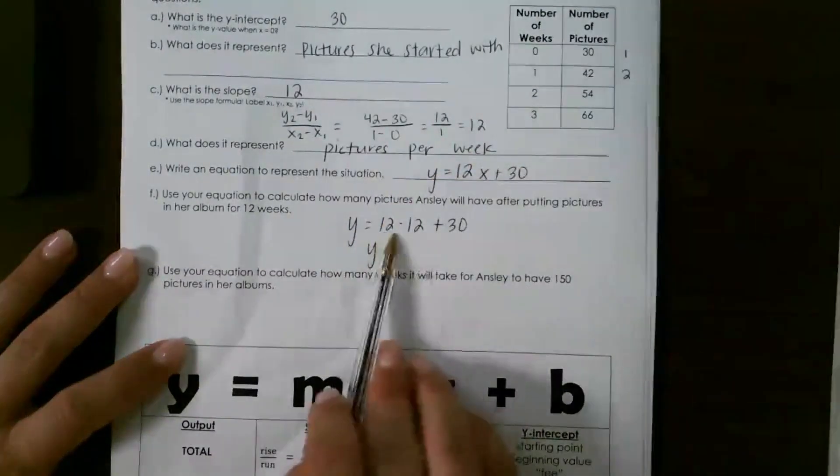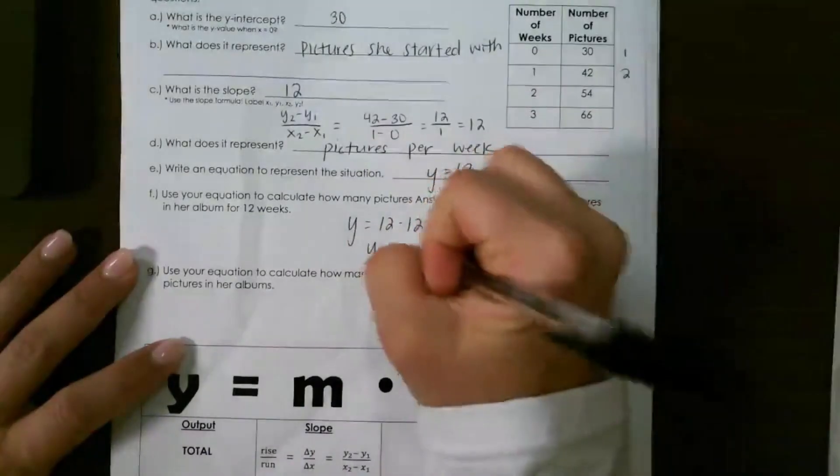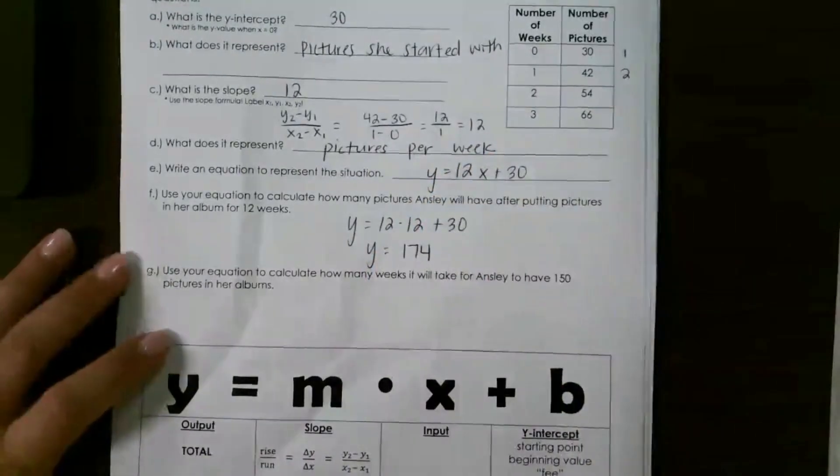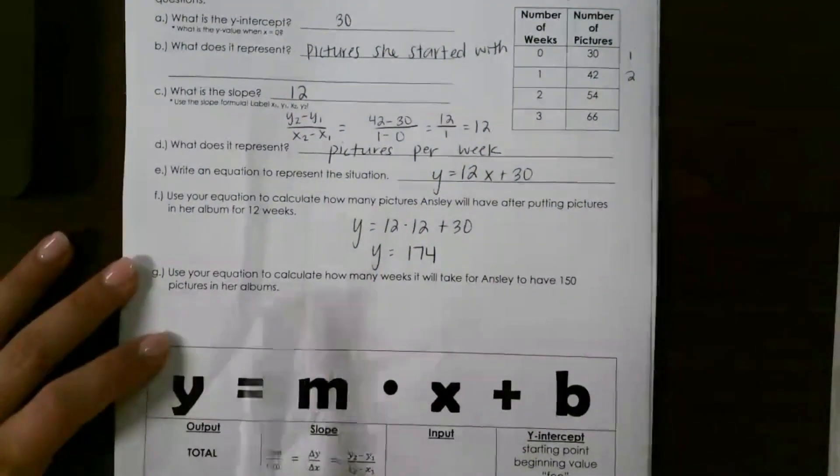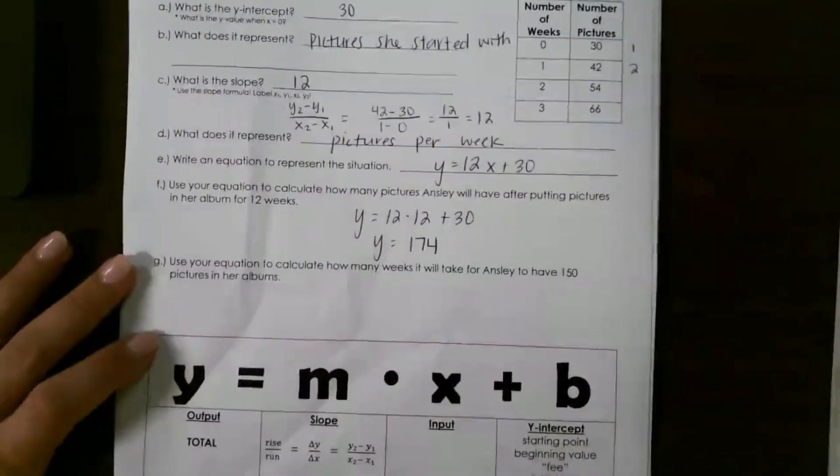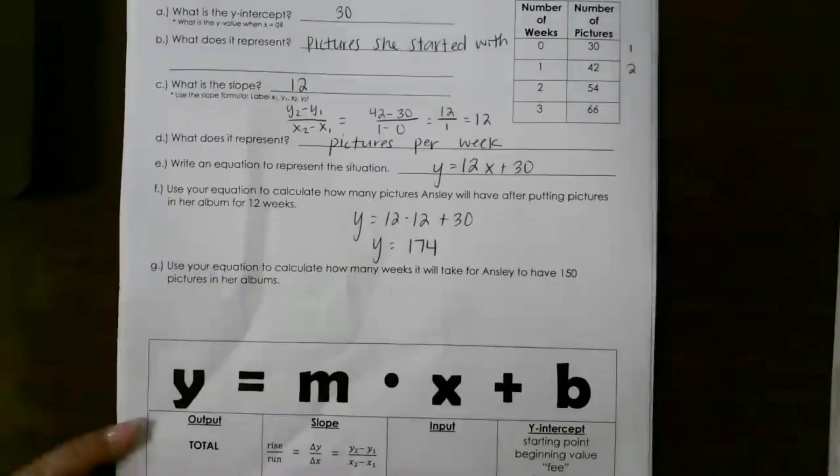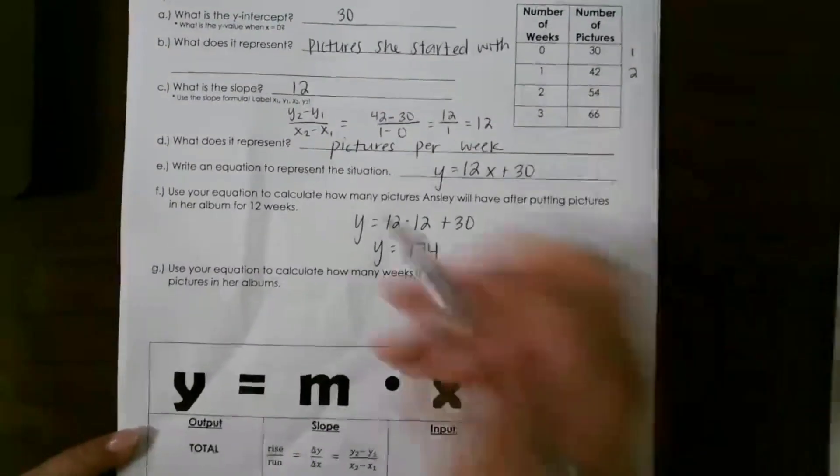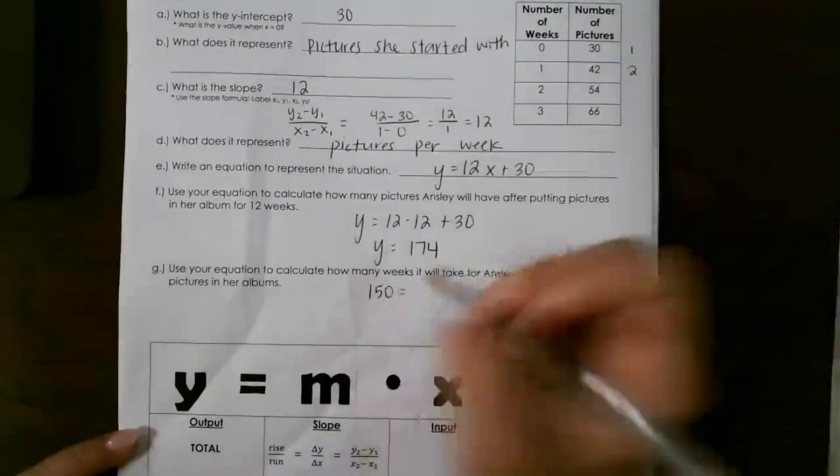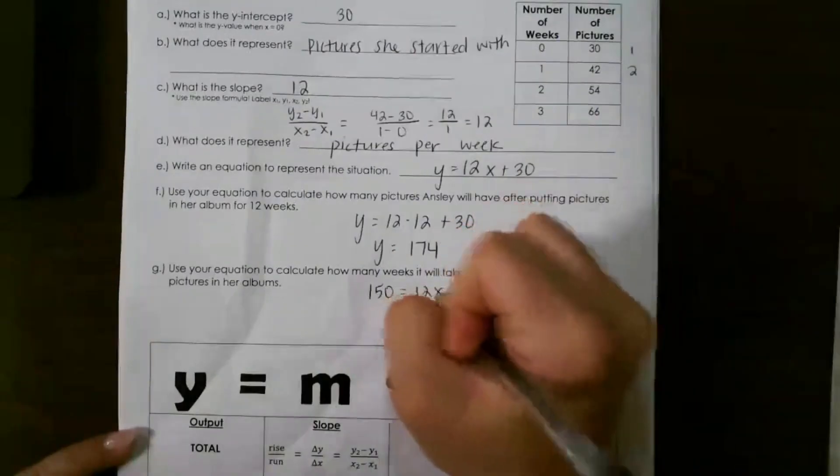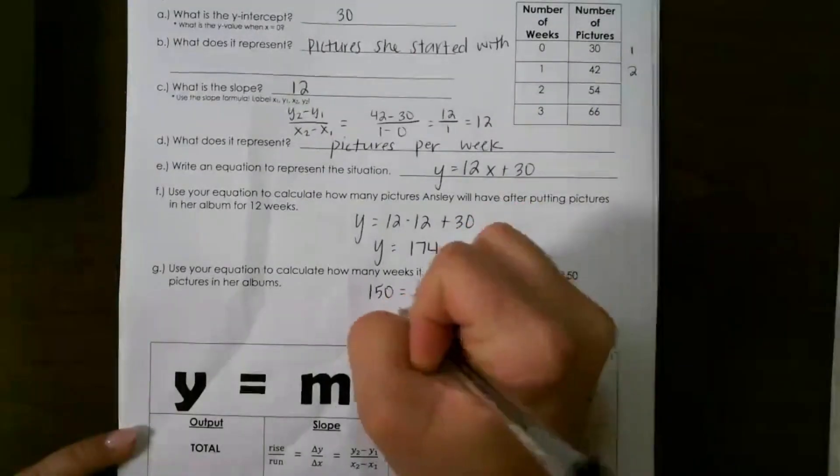So that's 144 plus 30 will give me 174. And then next, use your equation to calculate how many weeks it will take for Ainsley to have 150 pictures in her albums. So again, pictures is y, so I want to solve for x this time.